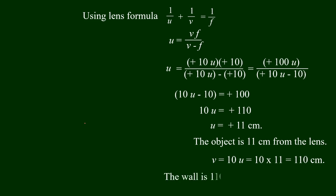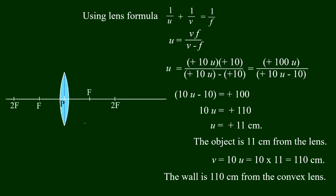The wall is 100 centimeters from the convex lens. There is a range of measurement of 11 centimeters. We take this measurement using the compressed lens and reflective surface.